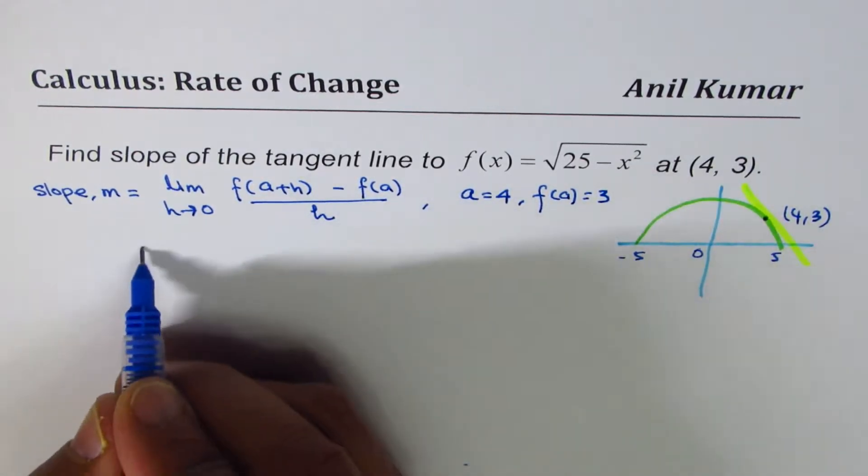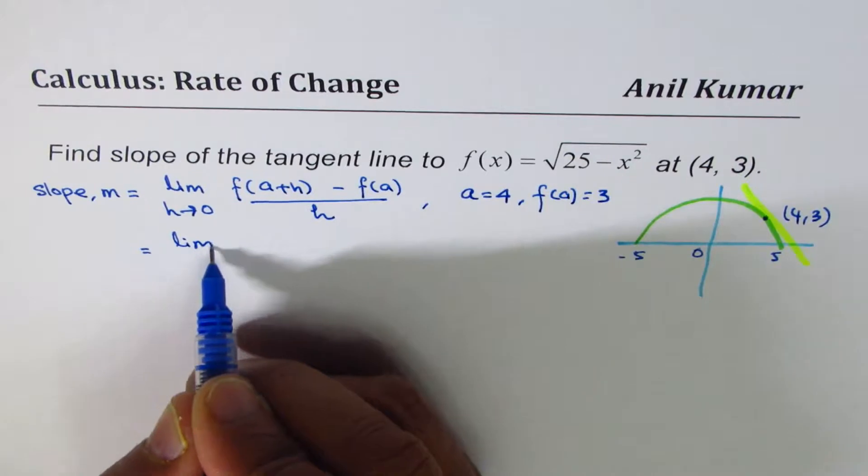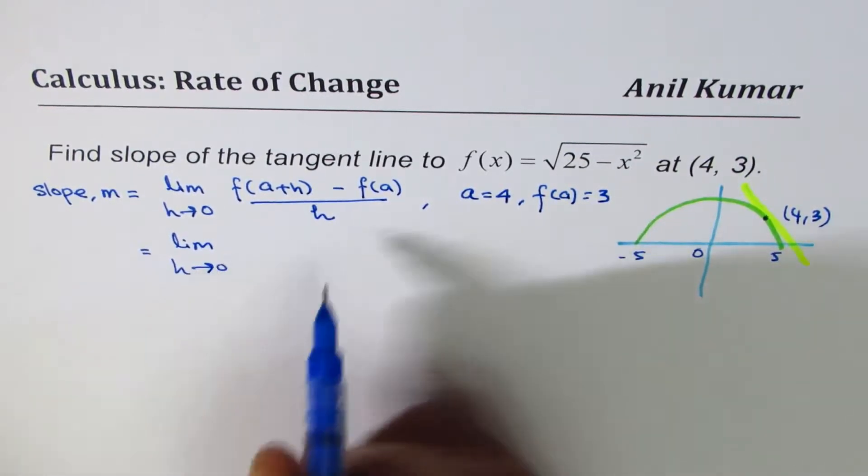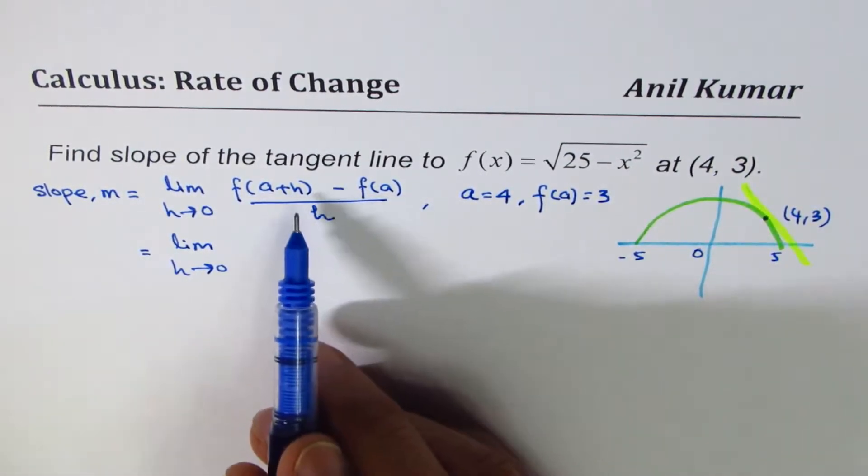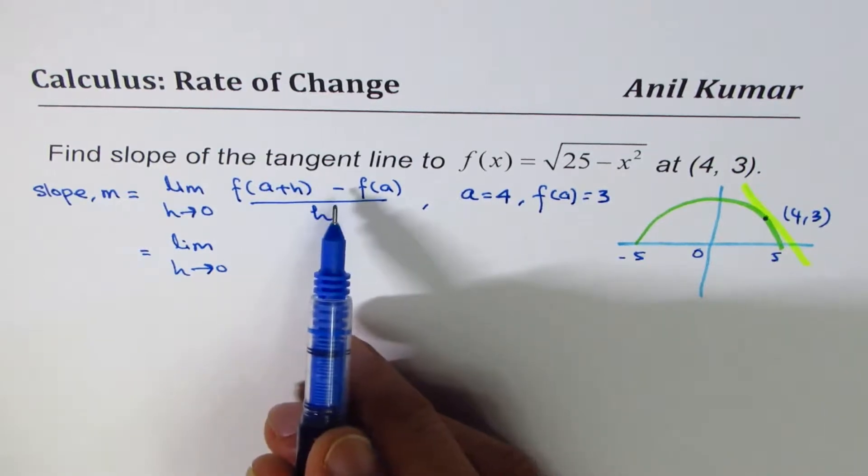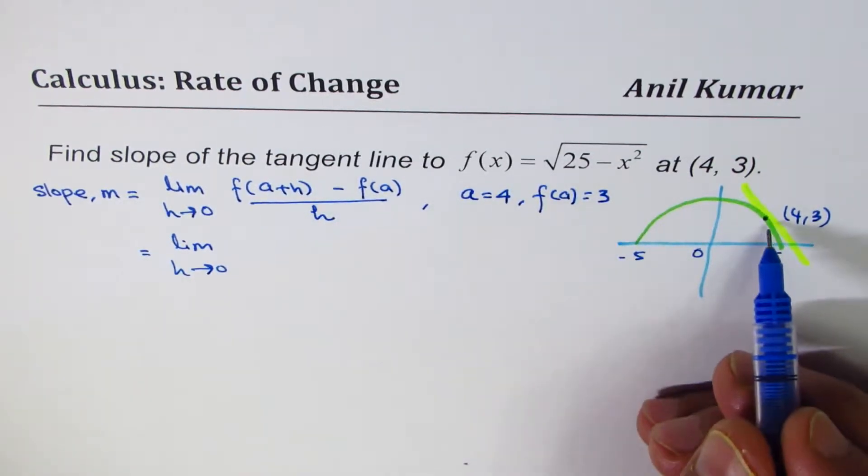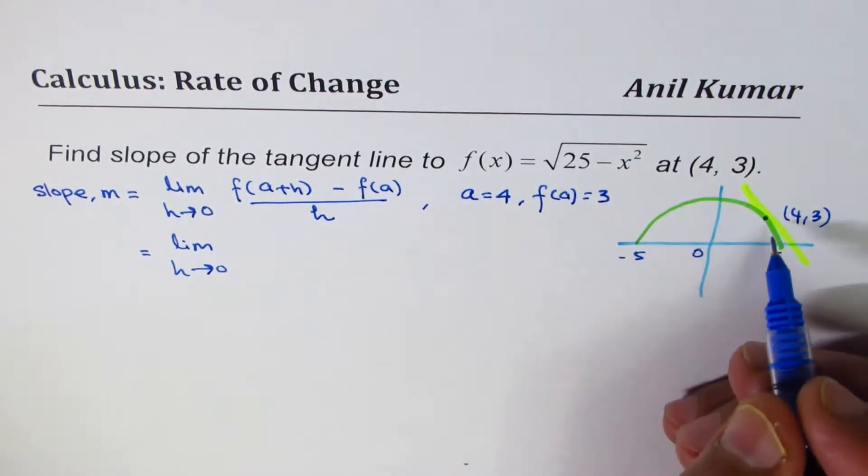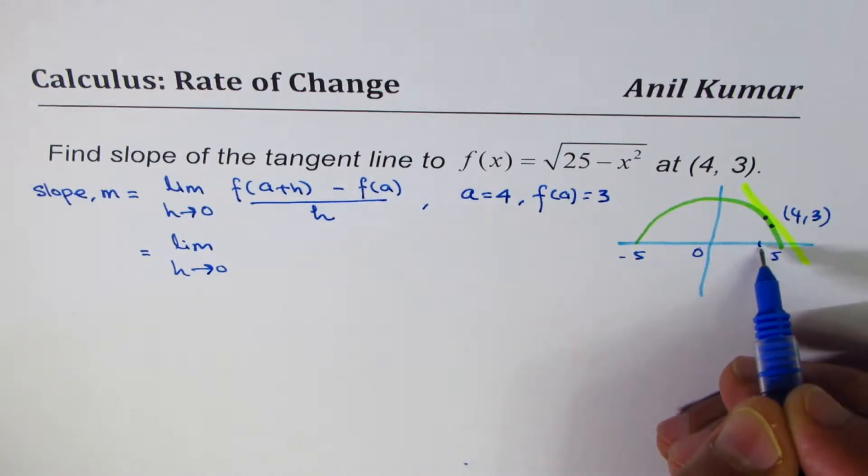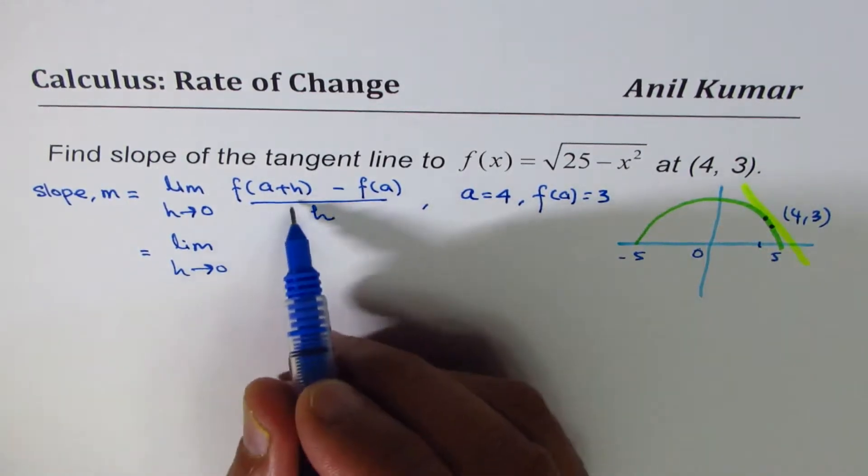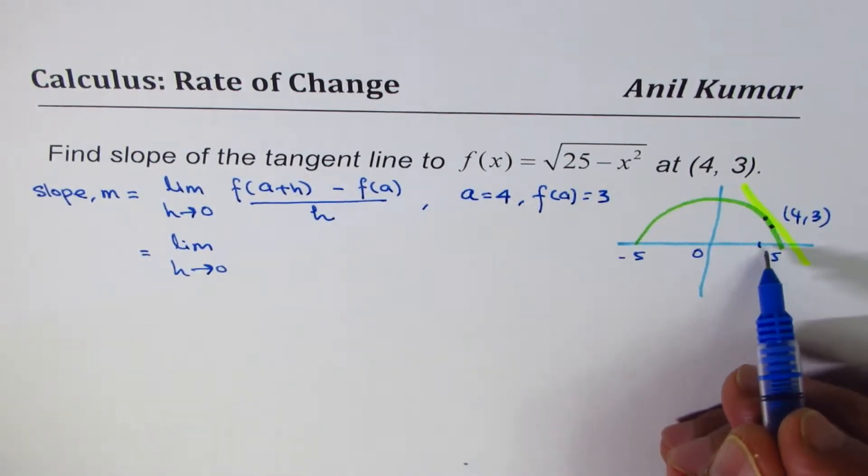Now, using this formula, we can find the change. The numerator is basically change in y value. f(a+h). We are considering two points. One at a, the other one slightly away, h distance away. So a plus h away. And that is very, very small, h approaching 0.